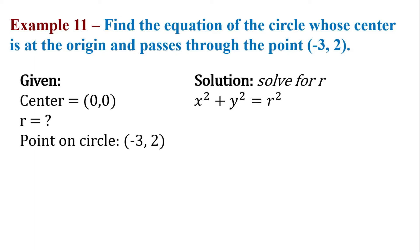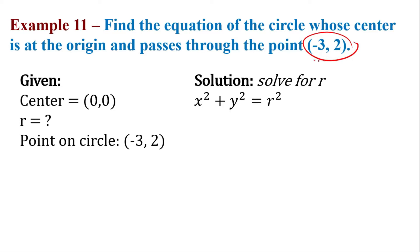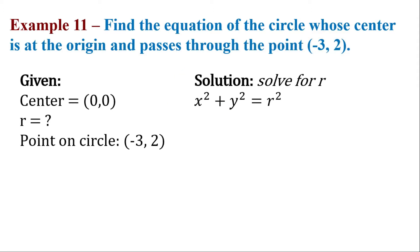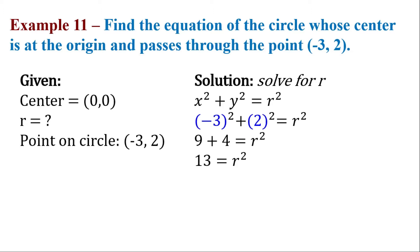So let's solve for the radius by substituting negative 3 comma 2 for x and y in the equation of the circle. Because if the circle passes through a point, meaning that point is a solution to the equation of the circle. So let's substitute that. Negative 3 squared is 9, 2 squared is 4. So 9 plus 4 is equivalent to 13. So our radius is the square root of 13.